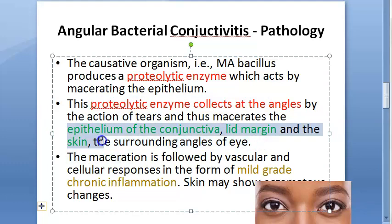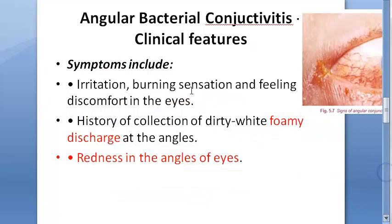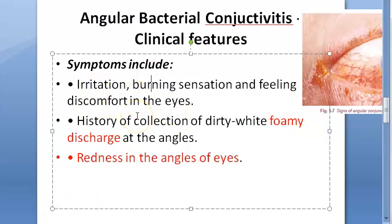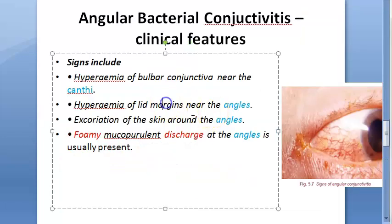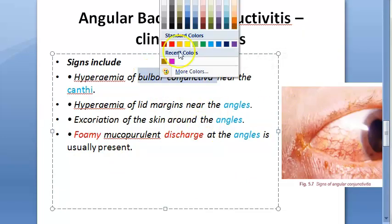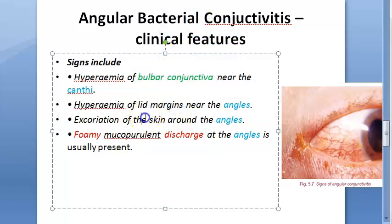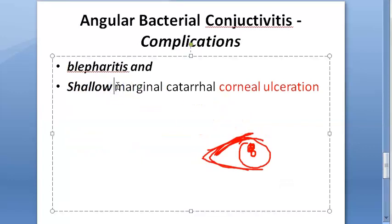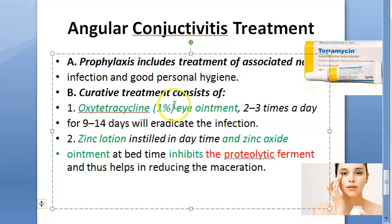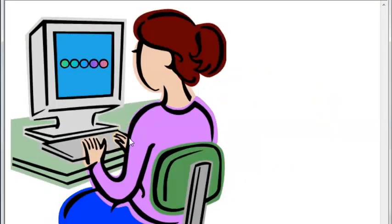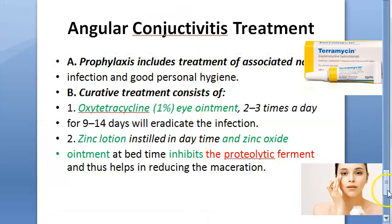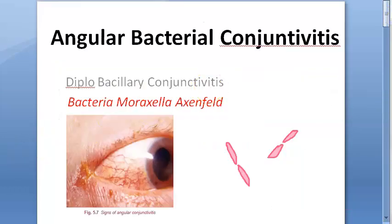The pathology involves proteolytic enzymes collecting at the angles via tears, macerating the epithelium of the conjunctiva, lid margin, and surrounding skin. Symptoms include irritation, burning sensation, discomfort, and foamy discharge with redness at the angle. Signs: hyperemia of bulbar conjunctiva and lid margins, skin excoriation, mucopurulent foamy discharge. Complications: blepharitis and corneal ulceration. Treatment: oxytetracycline 1% ointment, zinc lotion, and zinc oxide ointment.